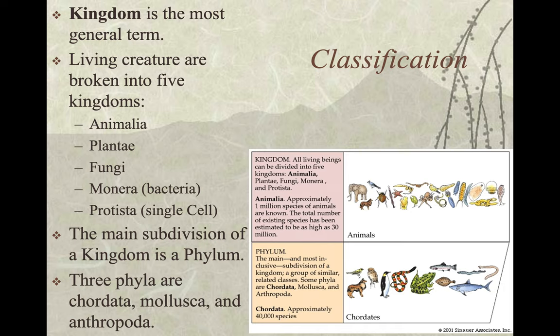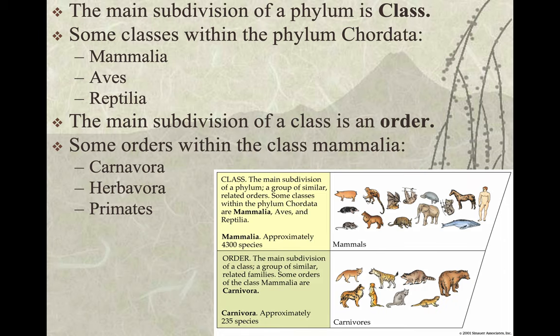The main subdivision of a kingdom is a phylum. Three phyla are Chordata, Mollusca, and Arthropoda. We as humans are Chordata. The main subdivision of a phylum is class. Some classes within phylum Chordata are Mammalia, Aves, and Reptilia — that's mammals, birds, and reptiles. The main subdivision of a class is an order. Some orders within the class Mammalia are Carnivora, Herbivora, and Primates. We as humans are Primates.